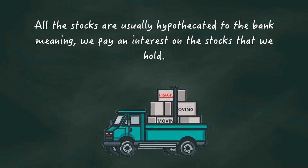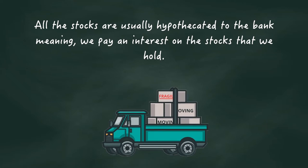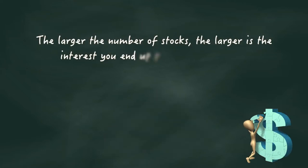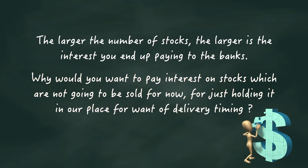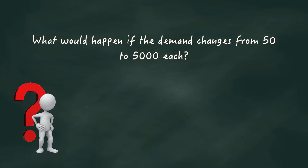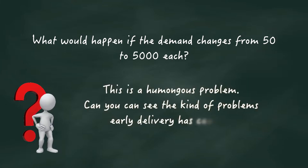The larger the number of stocks, the larger is the interest you end up paying the banks. Why would you want to pay interest on stocks which are not going to be sold for now, for just holding it in our place for want of delivery timing? Imagine what would happen if the demand changes from 50 to 5000 each. This is a humongous problem. Can you see the kind of problems early delivery has caused?